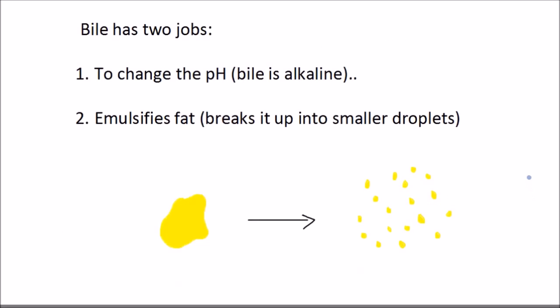Bile's first job is to change the pH, because the stomach is acidic, but the enzymes in the small intestine need to be in an alkaline environment. Bile is alkaline, so it neutralizes the acid from the stomach and makes it slightly alkaline in order to help digestion in the small intestine.